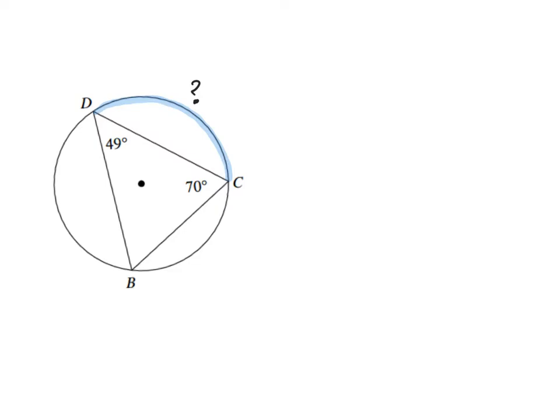First of all, I see a triangle inscribed inside this circle, and I know that all triangles have 180 degrees for the sum of their interior angles.